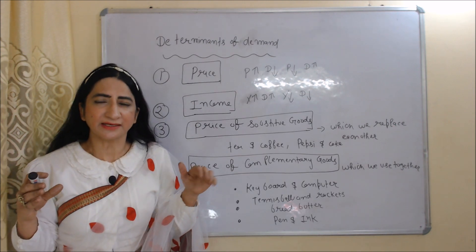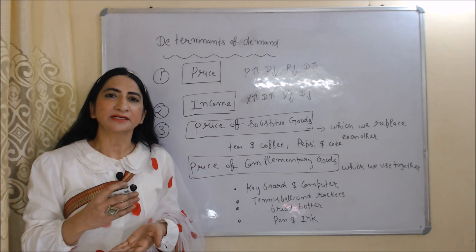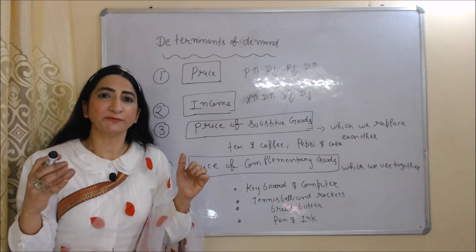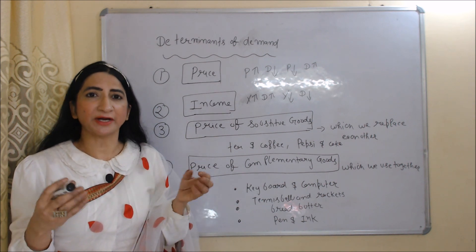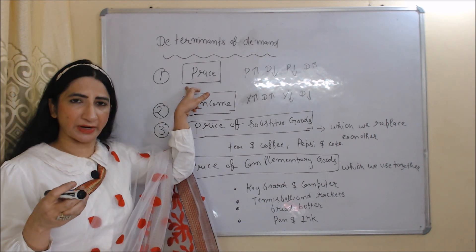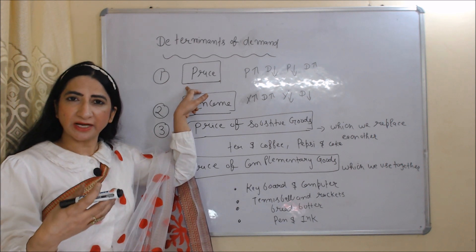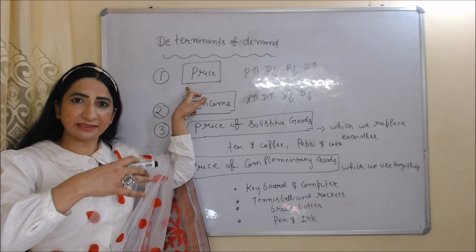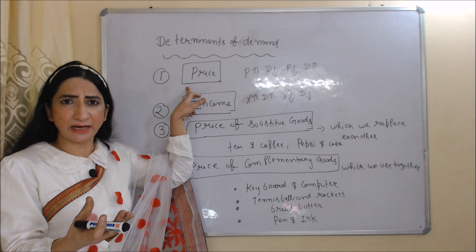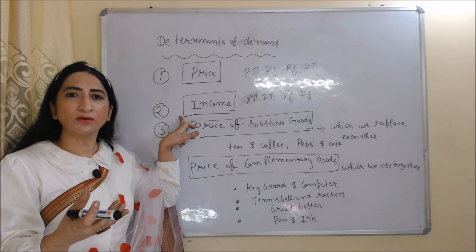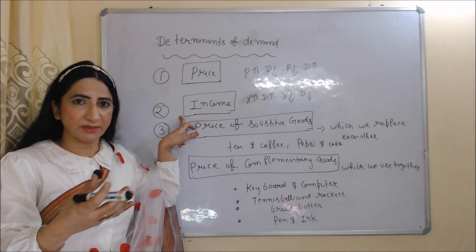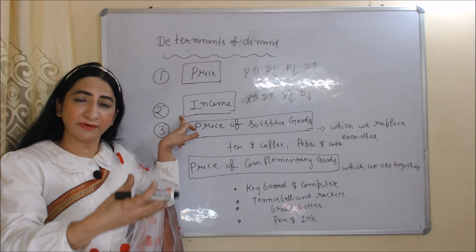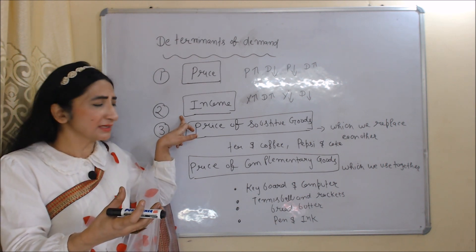Now we will see determinants of demand. Determinants of demand means factors which affect our demand. The first factor is price. If price of product is high, our demand will be less. If price of product is less, our demand will be high. Next is income — our demand is also influenced by our income. If our income is high, our demand will be high. If our income is less, our demand will be less.